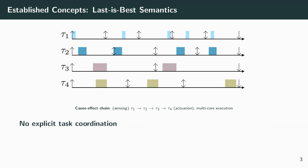To discuss some established concepts, as cause-effect chains are widespread in industry, there are a lot of approaches to executing them. At hand of this example system, we have four communicating tasks tau one to tau four. The communication direction is from top to bottom. The most straightforward execution pattern is integrating cause-effect chains as they were specified with last-best semantics.